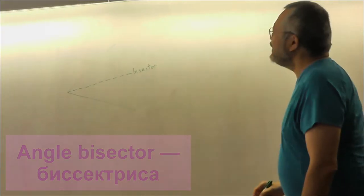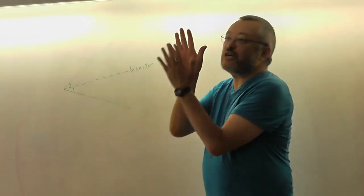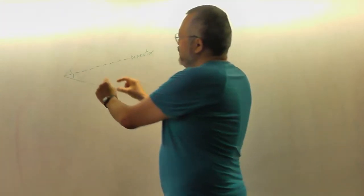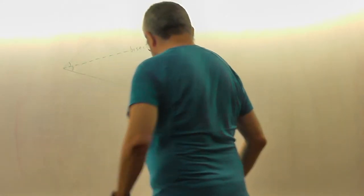This angle is equal to the same. Equal angles are just angles which are of the same size. We can put them on each other, they match, and so on.